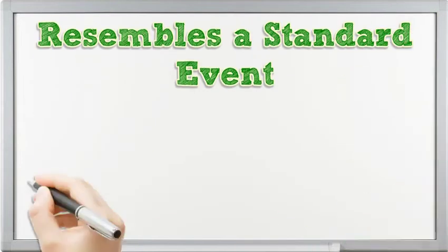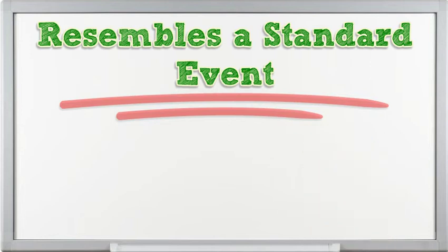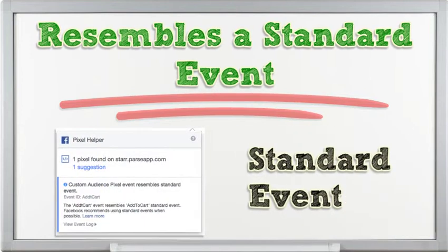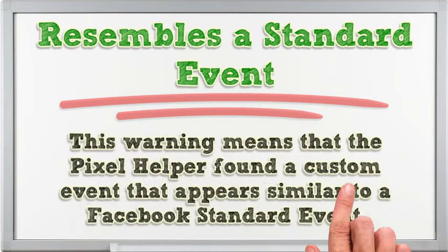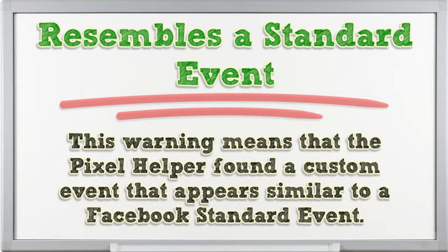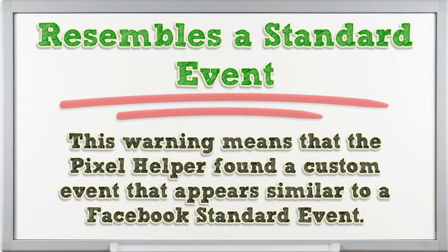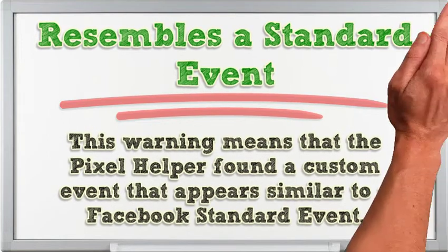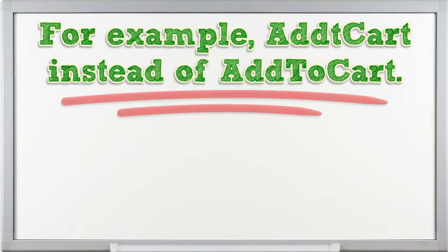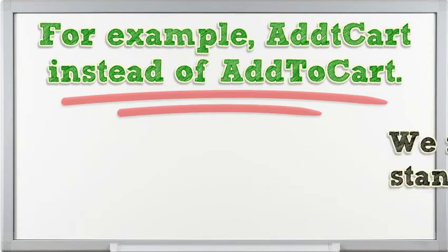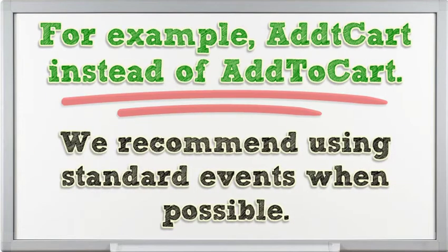Resembles a standard event: this warning means that the Pixel Helper found a custom event that appears similar to a Facebook standard event. For example, 'addt cart' instead of 'add to cart'. We recommend using standard events when possible.